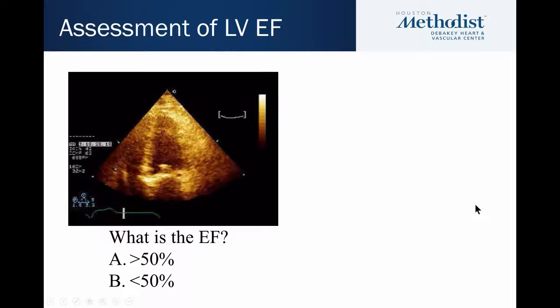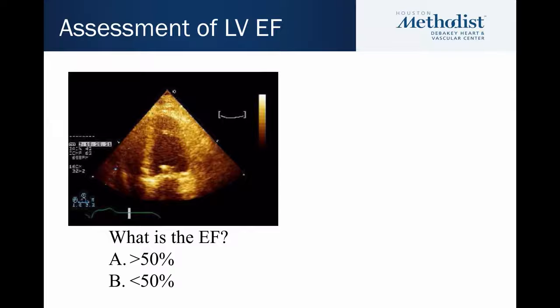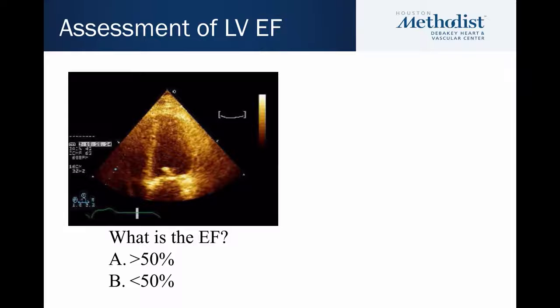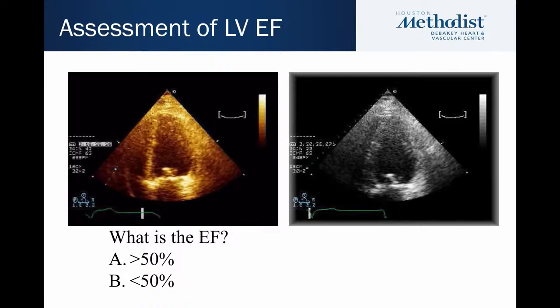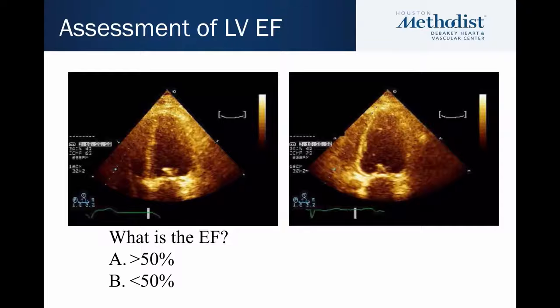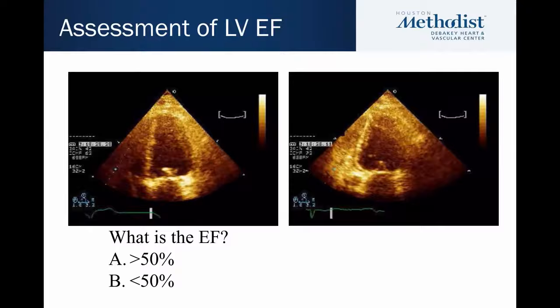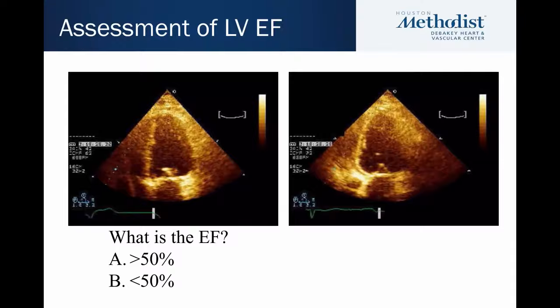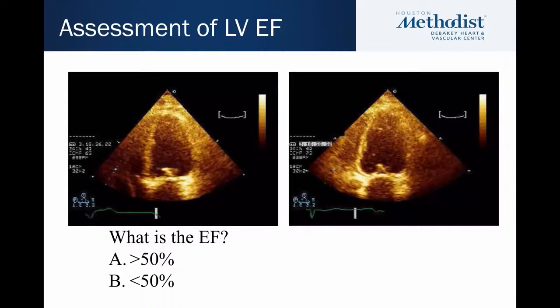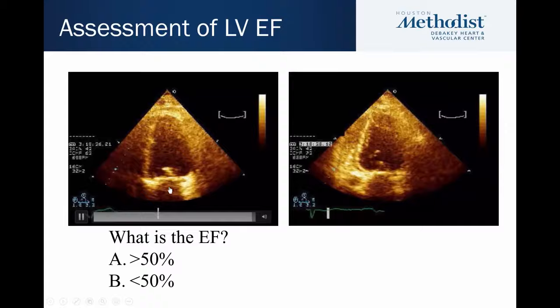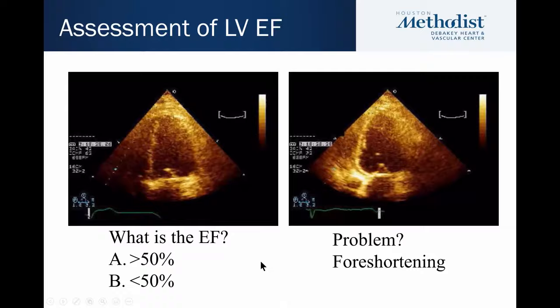We're going to start by showing a case and having each of you estimate the ejection fraction. Many of you would say the ejection fraction is probably 50% or better. Now this is the same patient — look at the EKG, it's identical, taken less than a minute later — and now we would all say that ejection fraction is clearly abnormal and depressed, not 50%. Also notice the left ventricle looks much bigger on this view. This is an example of a very common problem in echocardiography: the problem of foreshortening.